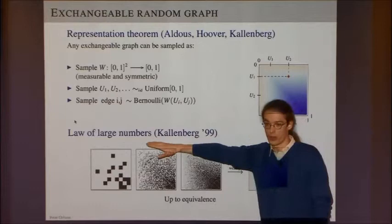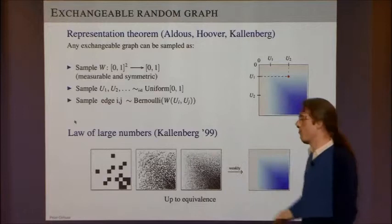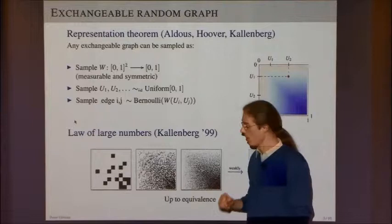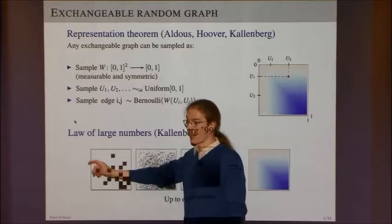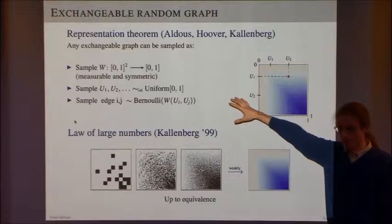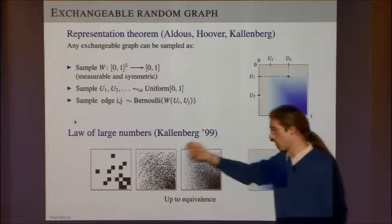Associated with this comes a law of large numbers, due to Kallenberg in 1999. I sample a graph of finite size and plot it as a checkerboard function on the unit square. If I have 10 vertices, I divide the square into 10 rows and 10 columns, coloring them black and white according to the adjacency matrix. This is a valid function on the square, so I can sample from it using the Aldous-Hoover scheme — which is just uniform sampling from the graph, sampling vertices uniformly and looking at the induced subgraph.